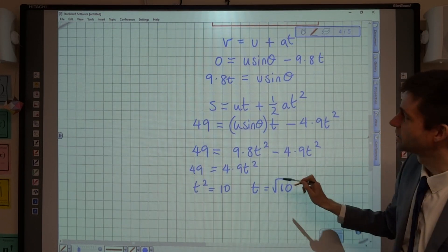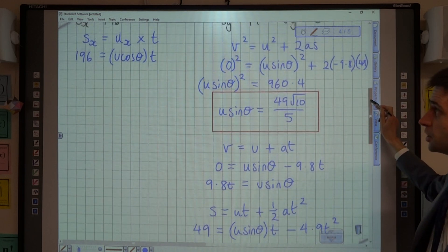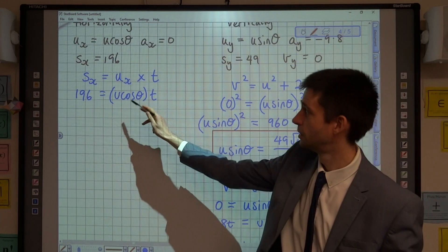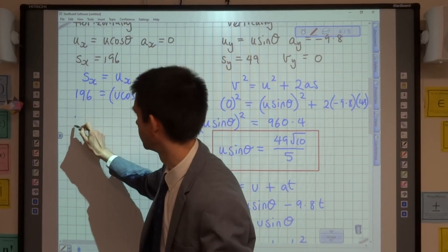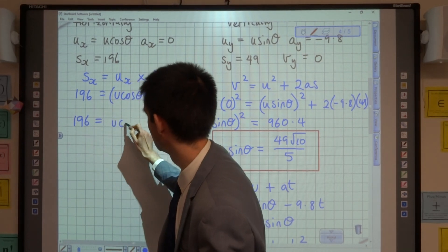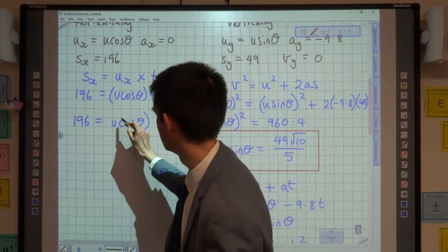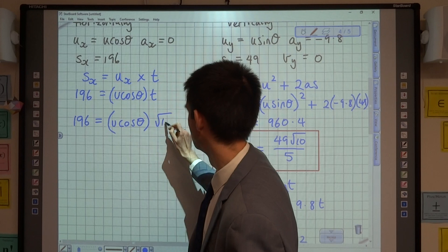So now I've worked out that t equals root 10, I can go back to my horizontal component here, and I now know this as a number. So I can substitute in, I can say 196 is equal to u cos theta multiplied by root 10.